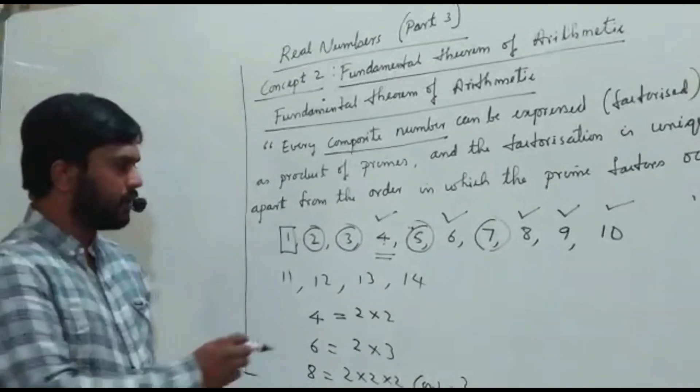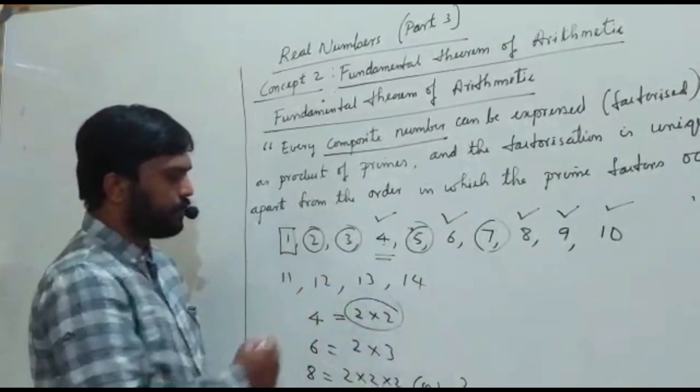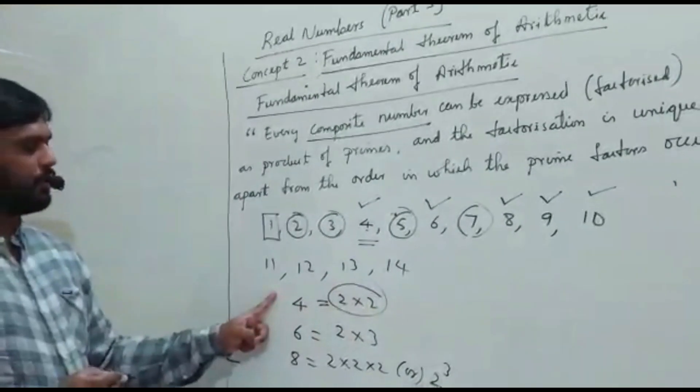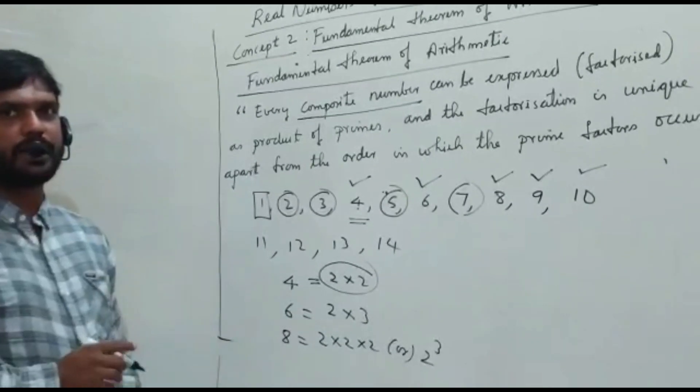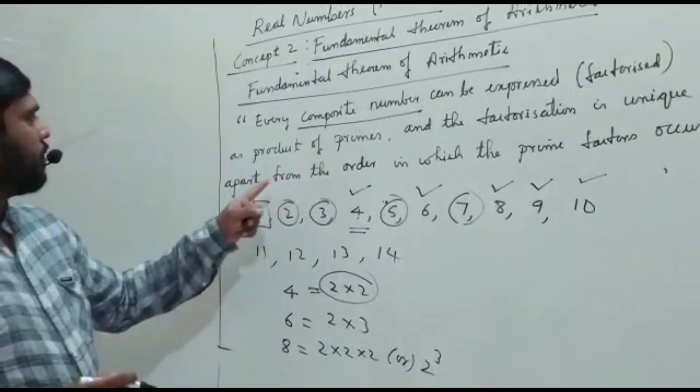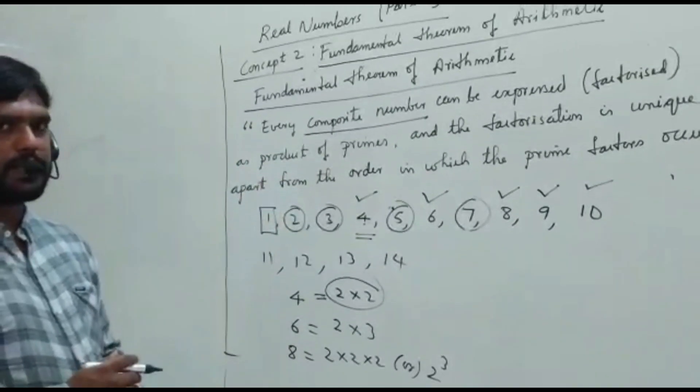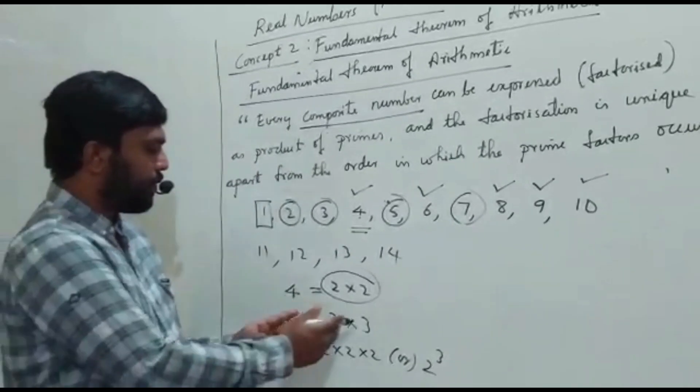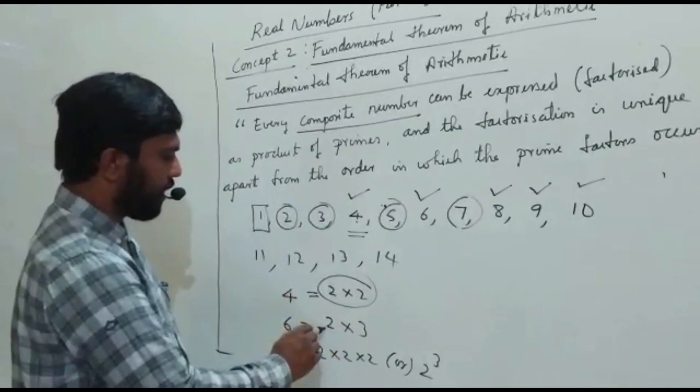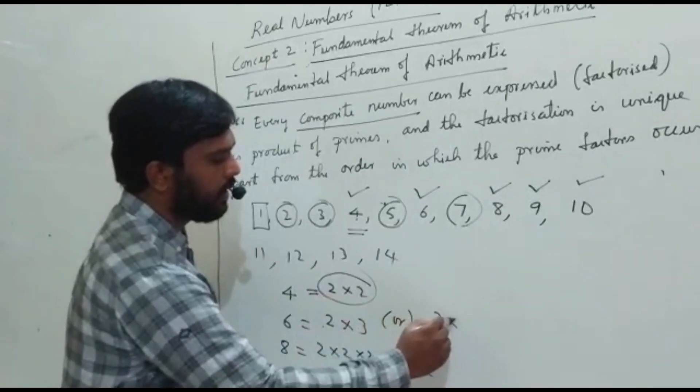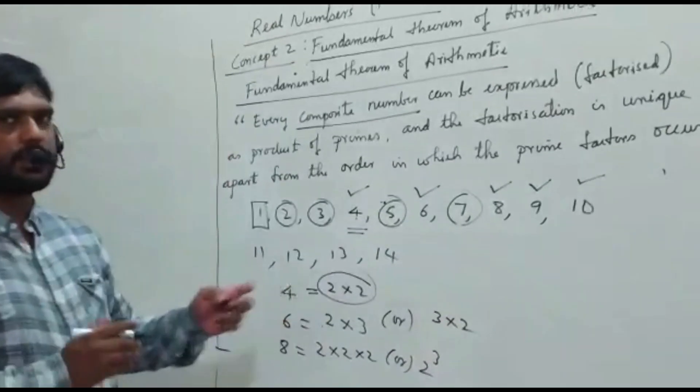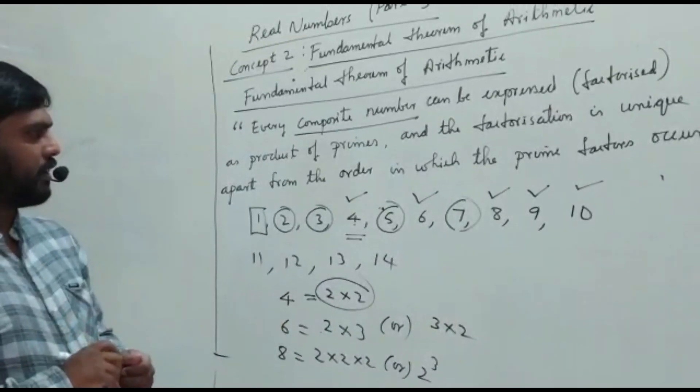Factorization is unique. 2 into 2 is only for 4. This 2 into 2 will not be for any other number. So it is unique. Apart from the order in which the prime factors occur, you can write any order. You can write 2 into 3 or you can change the order 3 into 2. So this is the fundamental theorem of arithmetic.